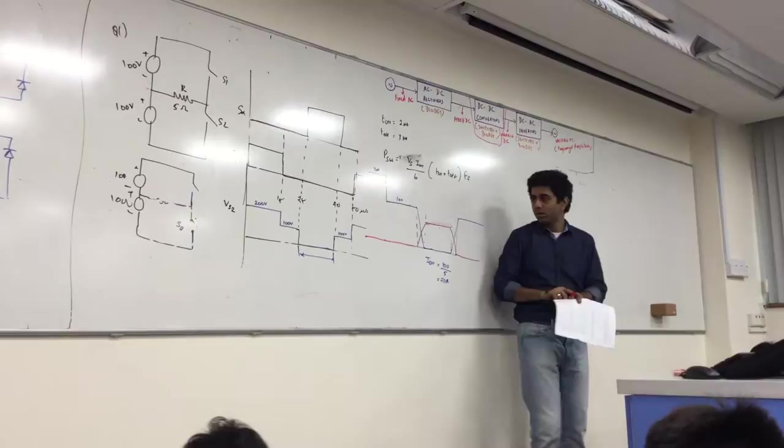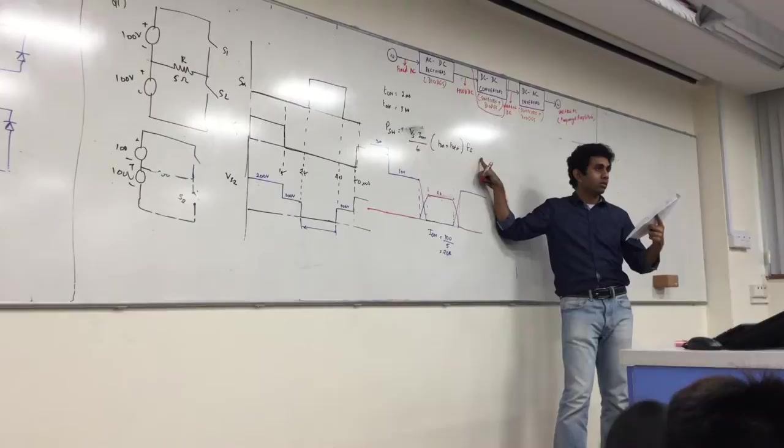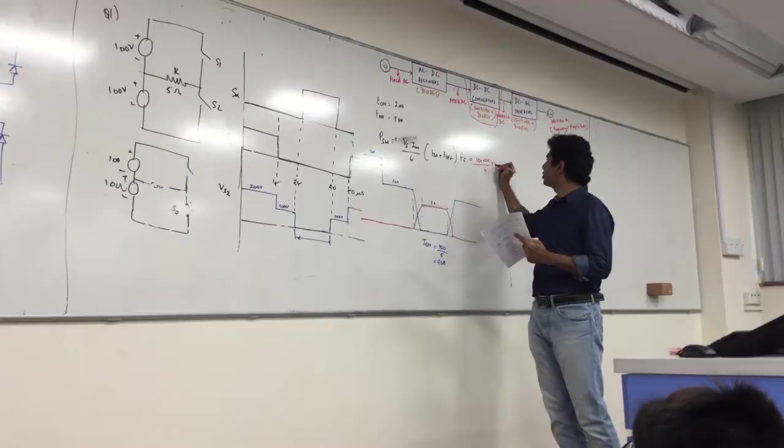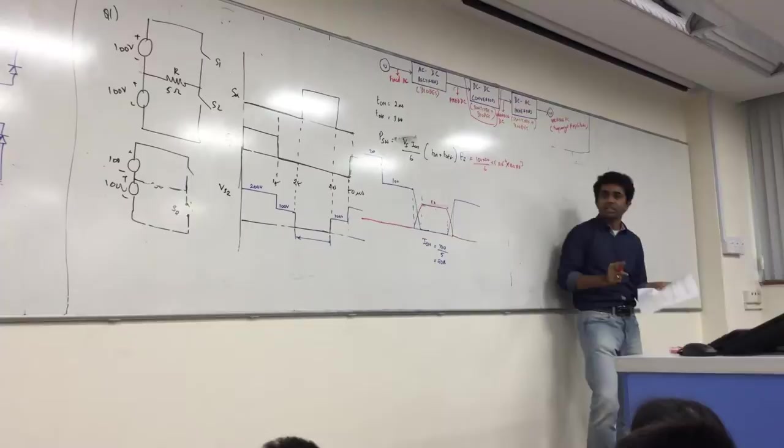So now this becomes easy. I know what VS is, I know what I_on is — 20 here — I know T-on, T-off, I know what fs is. So what I'm going to get is just 100 times 20 divided by 6, times 5 times 10 to the minus 6, times frequency. It's just this here, that's all.